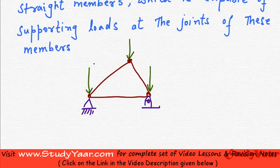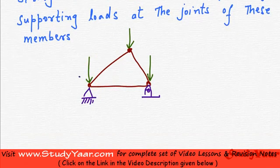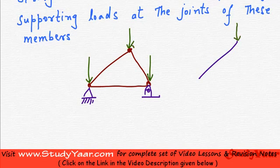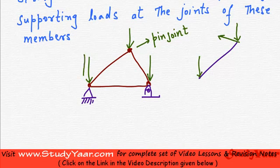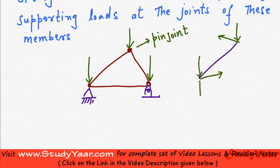We are going to look at a particular member and draw the FBD of it. There is a force acting on it due to a pin joint, and we are going to have a reaction. There is also a force acting at the other end due to that joint, and there is a reaction from the knife edge support as well.